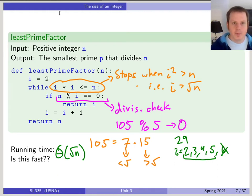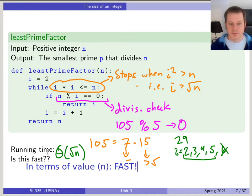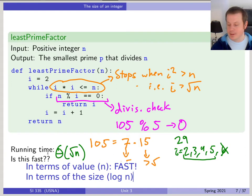But now we have to think about, wait a second, what did we just talk about? We talked about the difference between the size versus the value of an integer. So in terms of the value, which is n, in terms of the value, it's fast. So the value of this number is n. And in terms of that, this algorithm is really fast, square root of n is really fast. But in terms of the size, well, what's the size of n? The size of n is basically log n. And in terms of that size, this is not so fast.